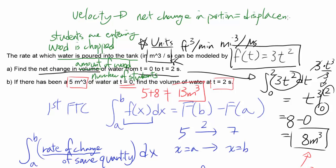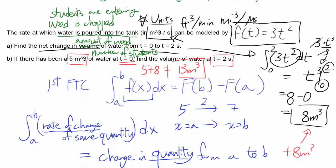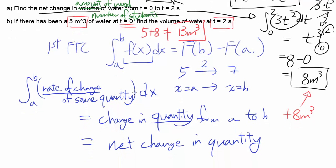So this equation can be used in variety of ways. Whenever you have rate of change of quantity and you want to find net change in that quantity from A to B, all you have to do is do definite integral of the rate of change function over that time.